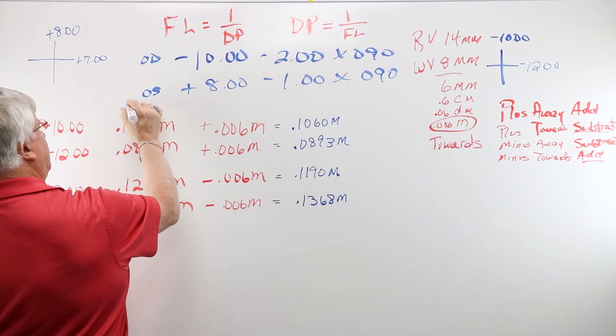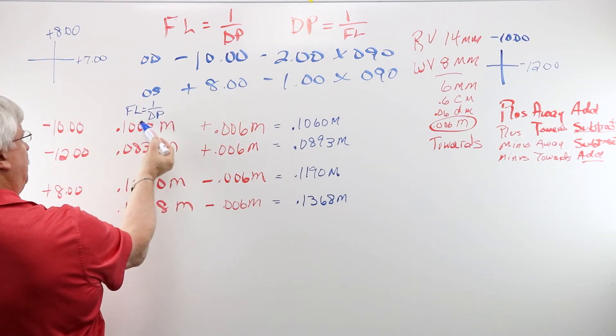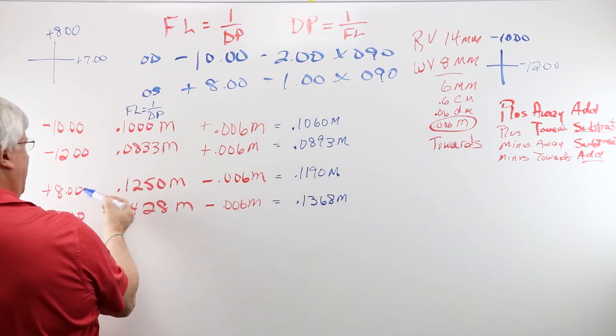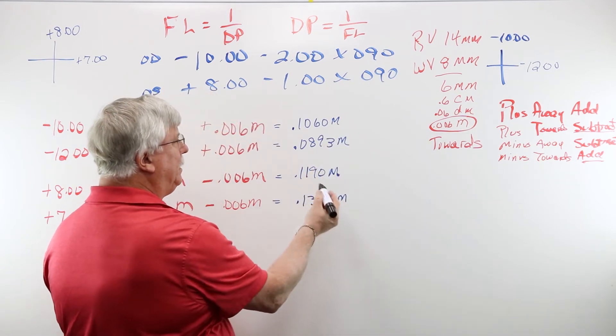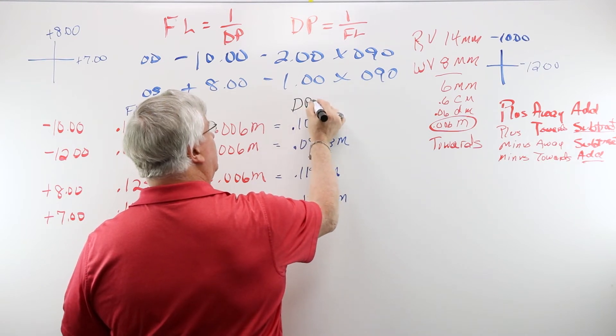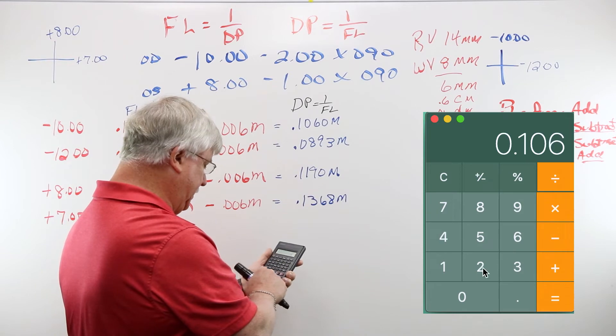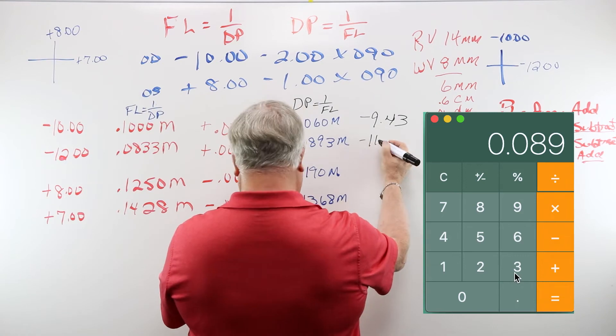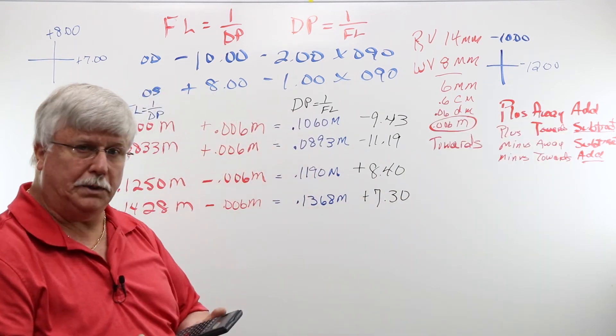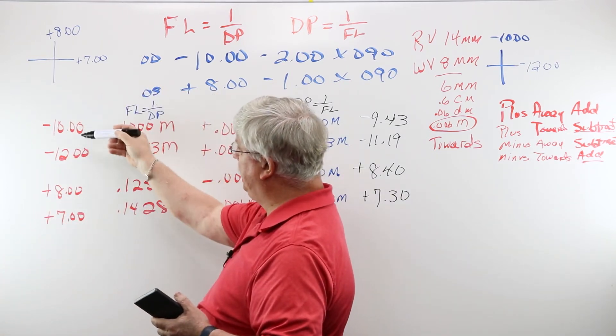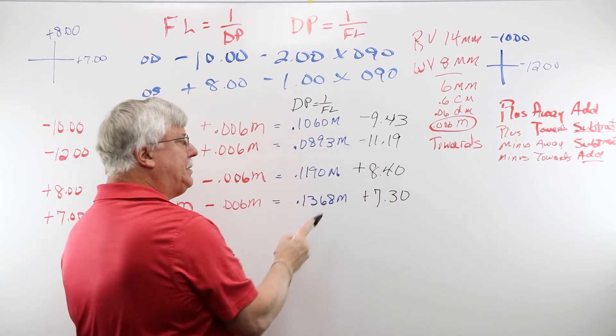To figure out this, I had to do focal length is 1 over dioptic power. So 1 divided by 10 gave me that. 1 divided by 12 gave me this. 1 divided by 8 gave me that, and 1 divided by 7 gave me this. Now I need to go back and convert the focal length into dioptic power. So I'm going to use the other formula: dioptic power is 1 over focal length. I take 1 divided by 0.1060. Now I need to determine what the new cylinder power is. The difference between these two is the cylinder power.